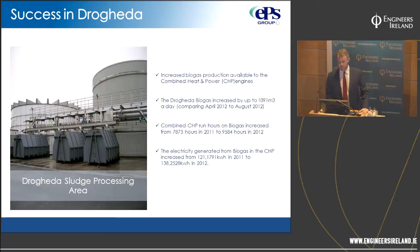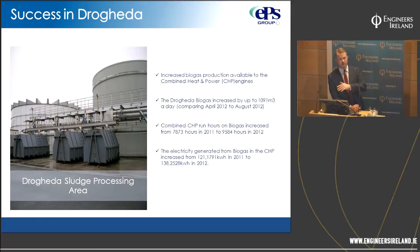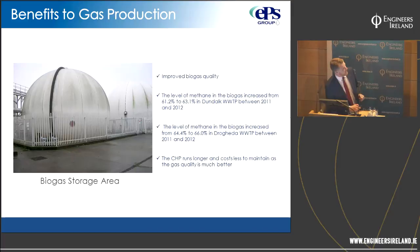There's been an increase of nearly a third in CHP run hours — and any run hours in a combined heat and power engine mean we're producing electricity on site for our own use. The electricity figure looks a bit low comparing 2011 to 2012 because we only turned Drogheda on in June. However, across Drogheda and Dundalk combined it's a 22% increase in kilowatt hours generated on site — about 28% on Drogheda alone.